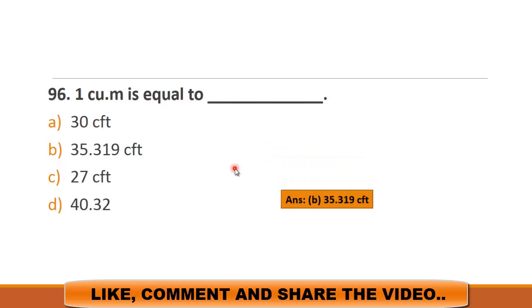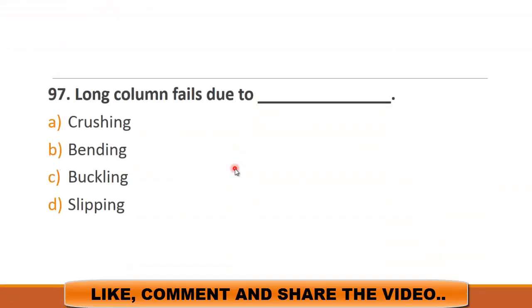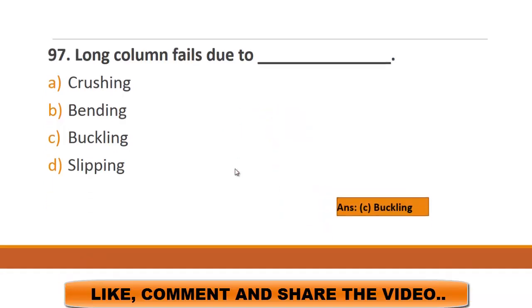MCQ number 97 is: long column fails due to. a) crushing, b) bending, c) buckling, and d) slipping. Short columns generally fail by crushing while long columns fail by buckling. So the right answer is c) buckling.